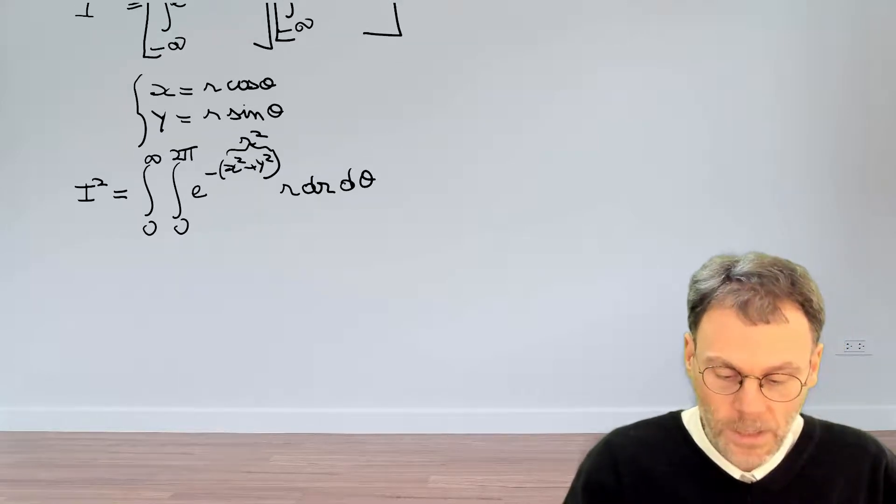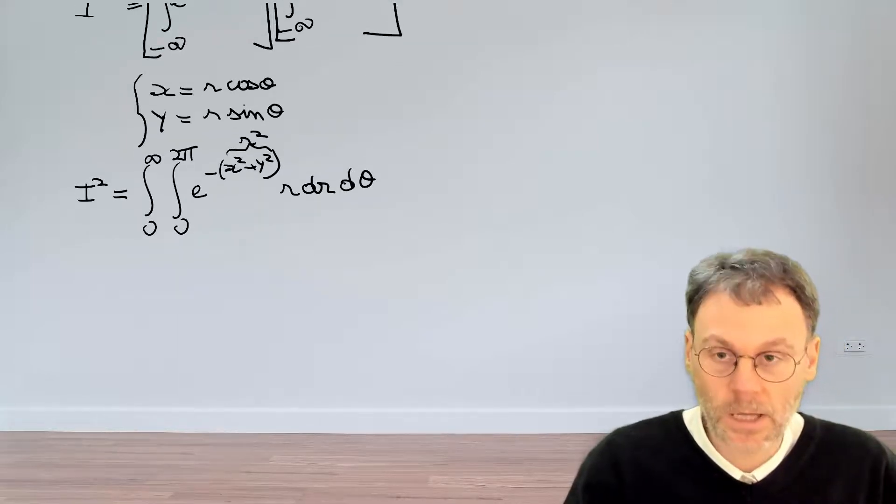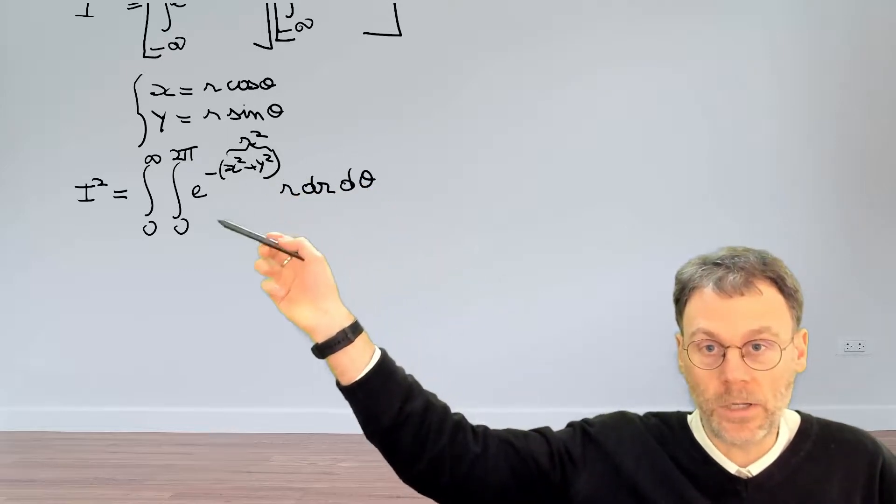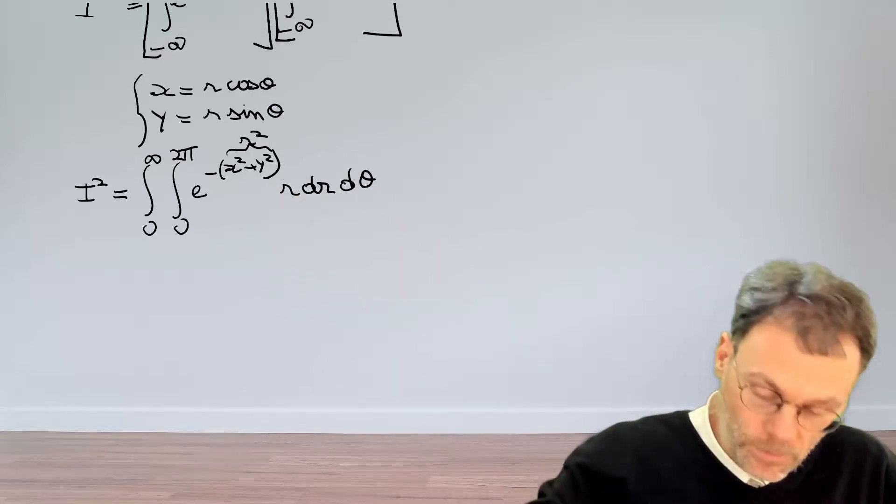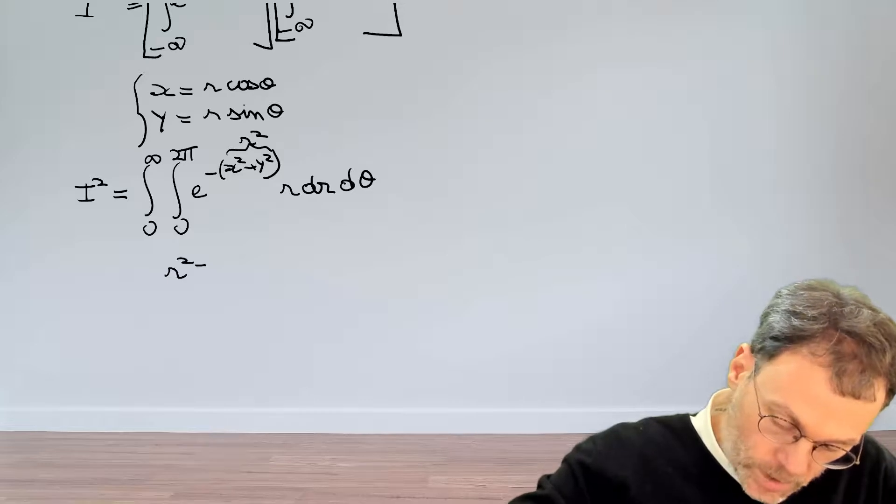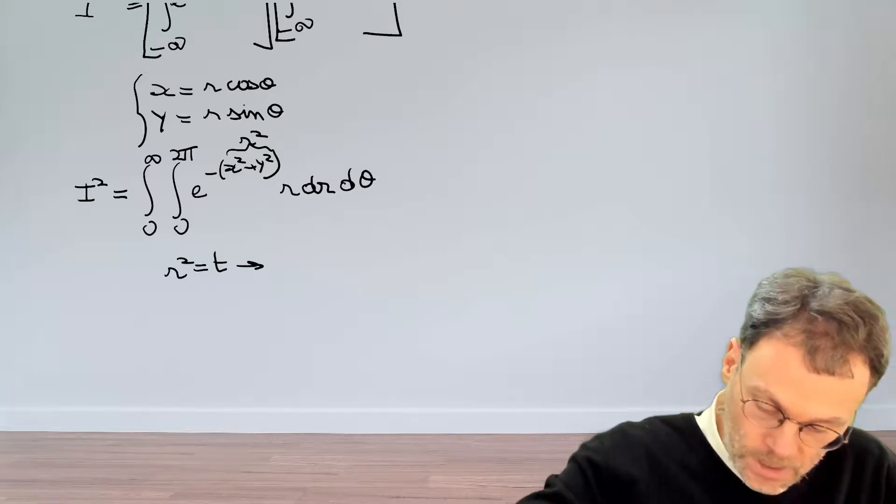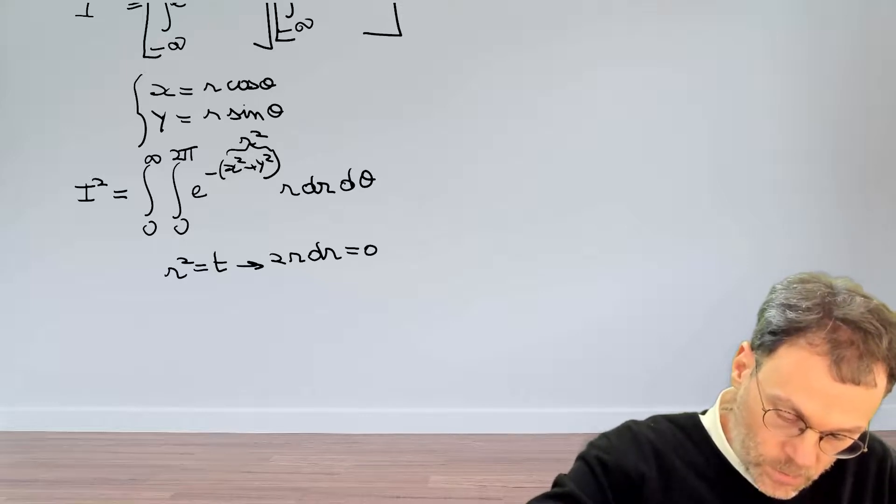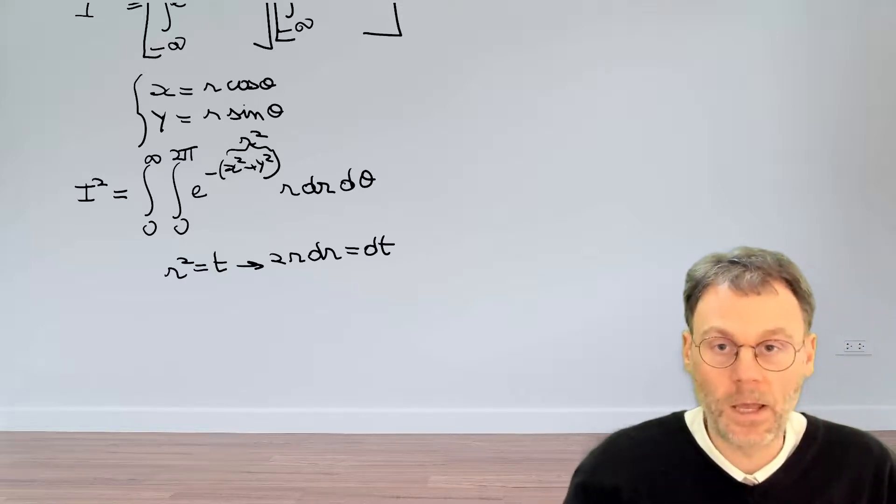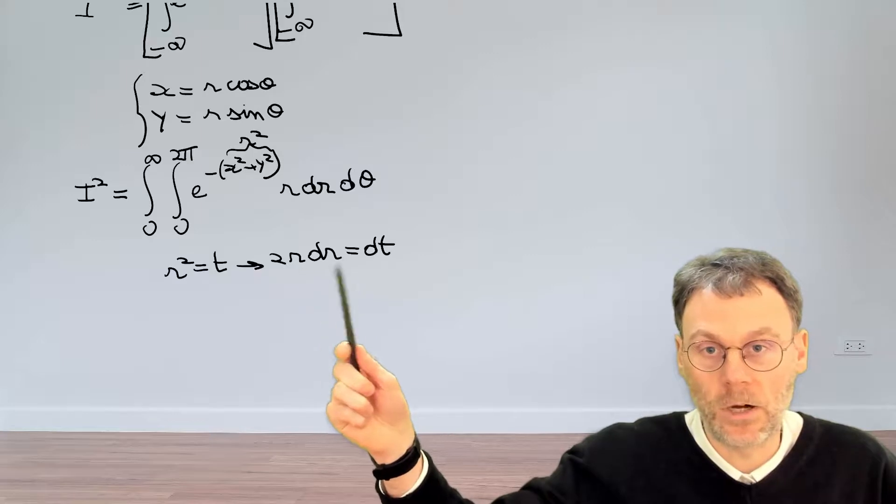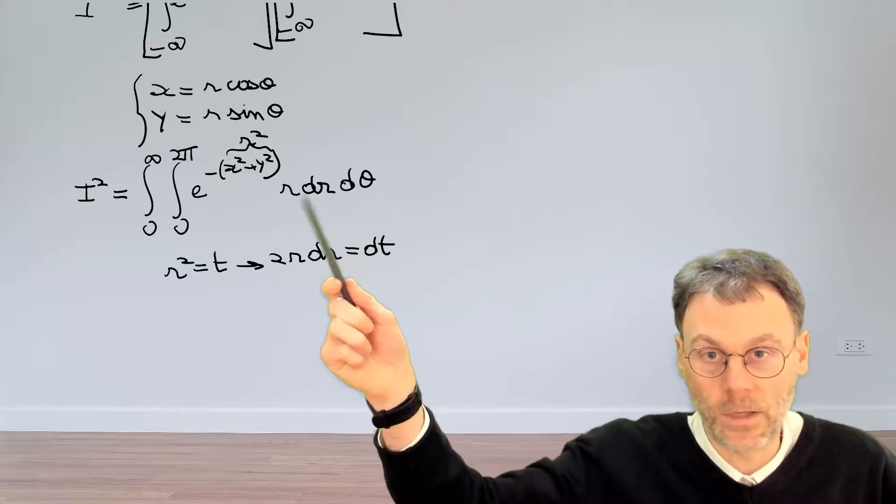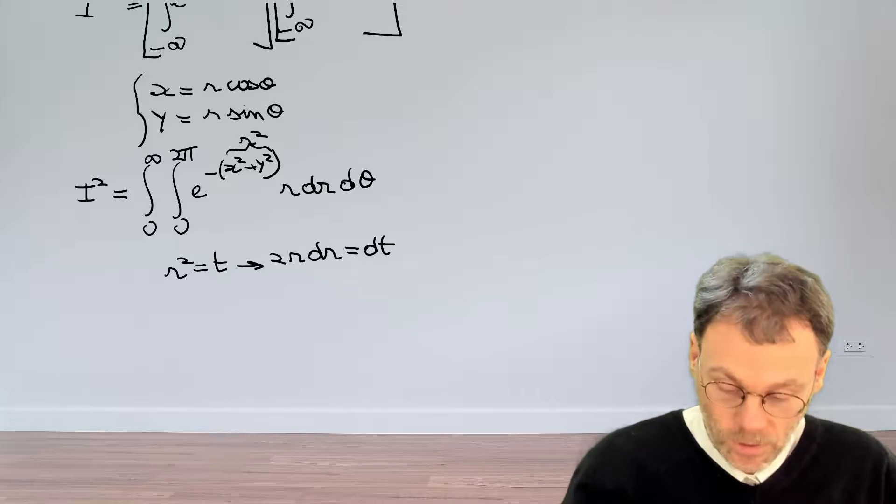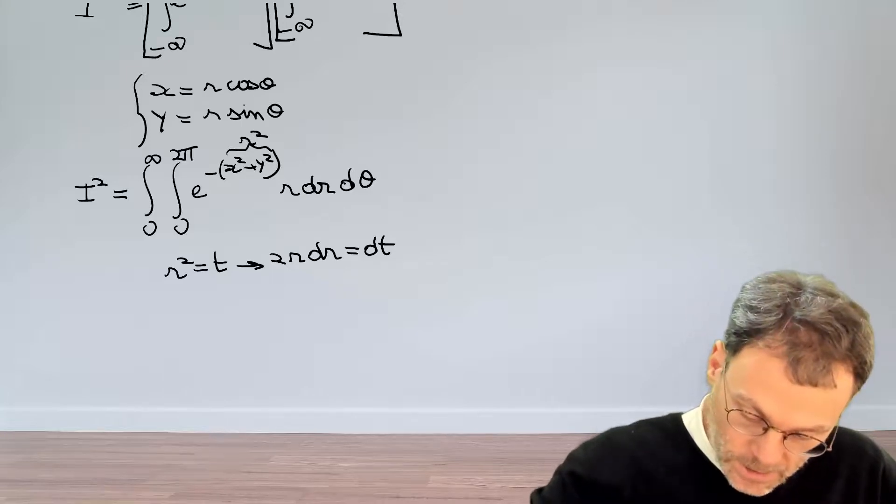Now we can take this one step further and get rid of this r squared here in our exponent. So we can make the substitution, for example, r squared is equal to t, which will give us 2r dr equal to dt. And the interesting thing is that the r dr that pops up here is also the same thing that we find just there. So that looks quite promising. Let's continue.